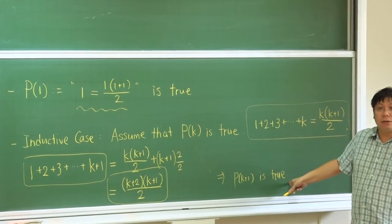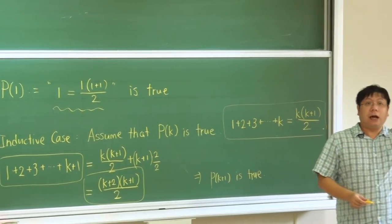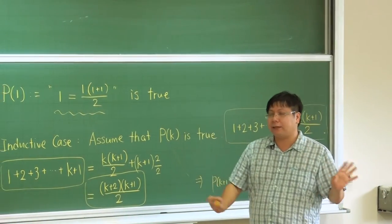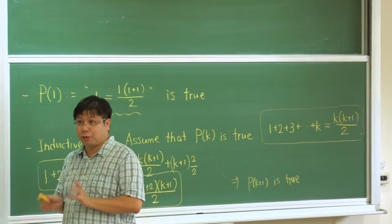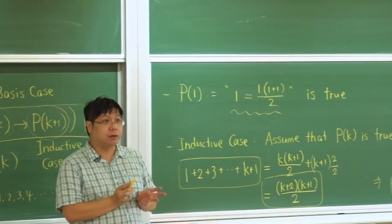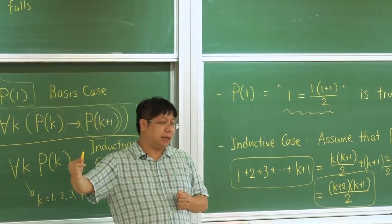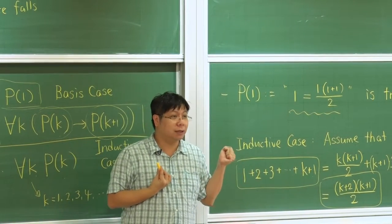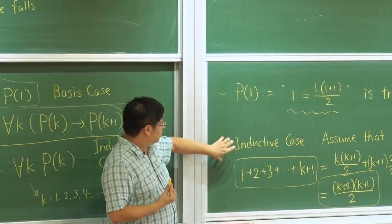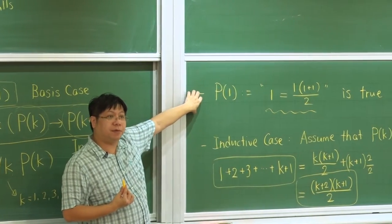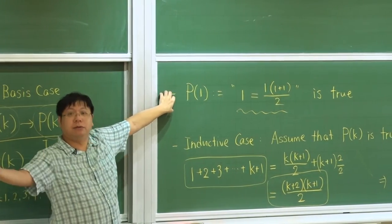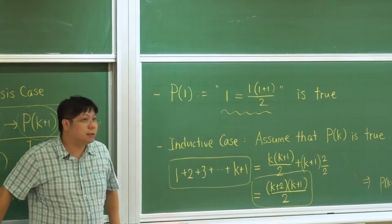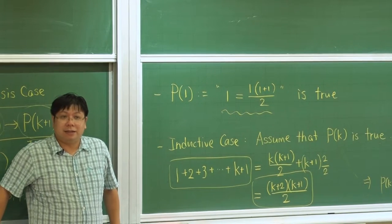Notice what we are doing here: we assume P(k) is true, then P(k+1) is true. We are not saying anything about P(k+1) on its own — we don't know whether P(k+1) is true or false independently. But we know that if P(k) is true, then P(k+1) is true. This inductive case combined with the basis case becomes very powerful — together we can show that all possible P(k) will be correct.